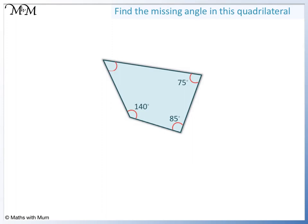We are going to find the missing angle in this quadrilateral. To do this, we will add up all the angles and subtract them from 360 degrees. 75 plus 85 equals 160 plus 140 equals 300. 360 minus 300 is 60. So the missing angle is 60 degrees.